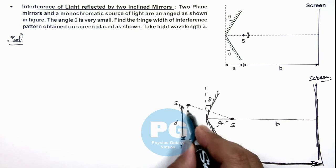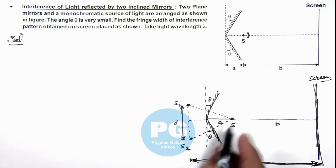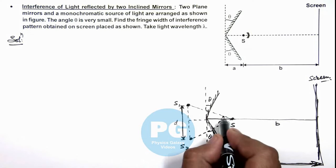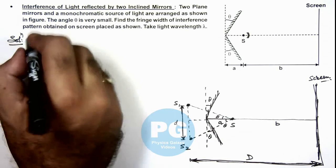If we talk about this separation S1 and S2, then we can write if this angle is theta, these two angles will also be theta by symmetry. So here we can write in figure shown: